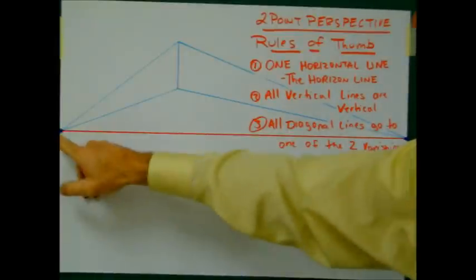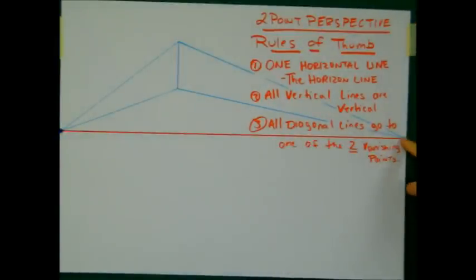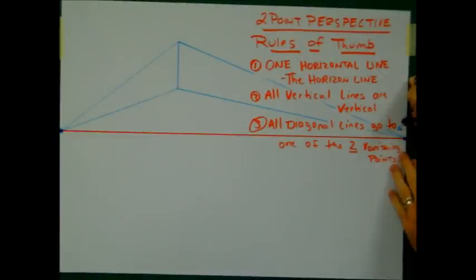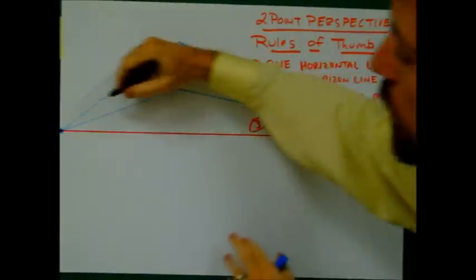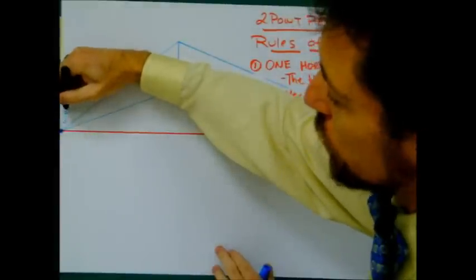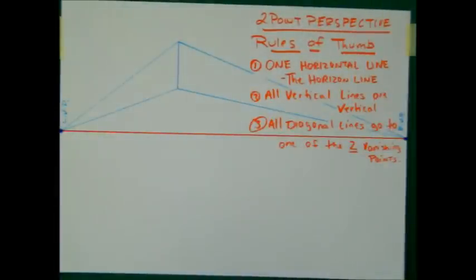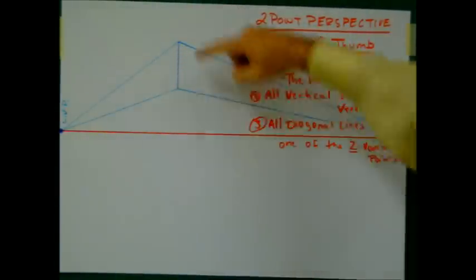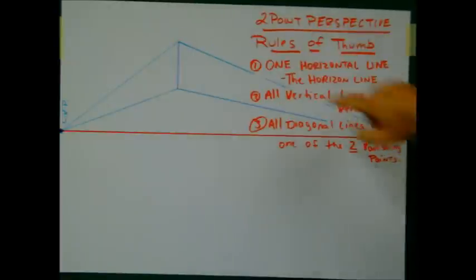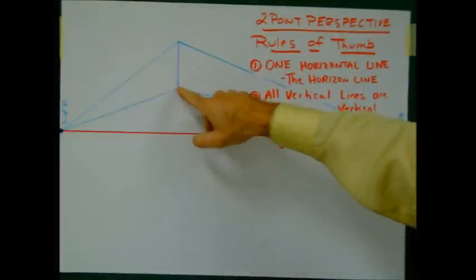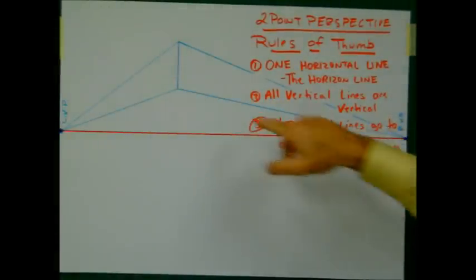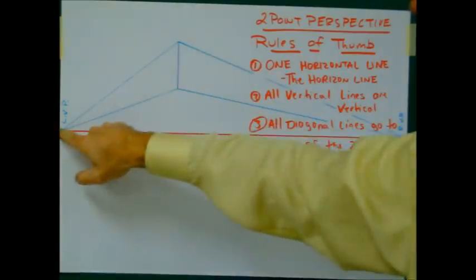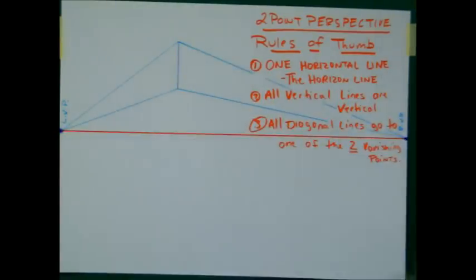Go ahead — if you haven't already, draw in your horizon line, draw in your right vanishing point, and draw in your left vanishing point. I also want you to draw in one vertical line. From the top of that vertical line to your right, and the bottom to your right vanishing point, and then from the top to your left vanishing point, and the bottom to your left vanishing point. Go ahead and do that.